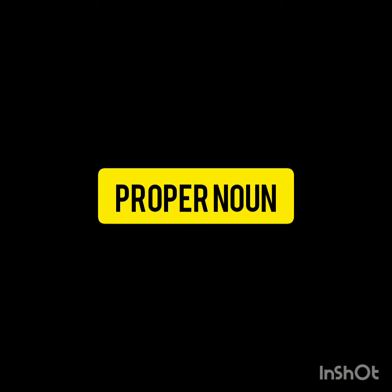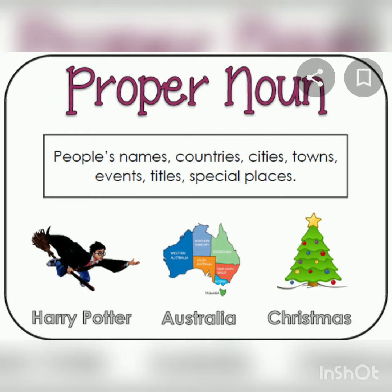First we will study about proper noun. What is a proper noun? Proper nouns are the words that represent a particular person, place, animal or thing. Here, Harry Potter — it is the name of a particular person, so it is a proper noun. Australia is the name of a particular place. Christmas tree is the name of a particular tree.